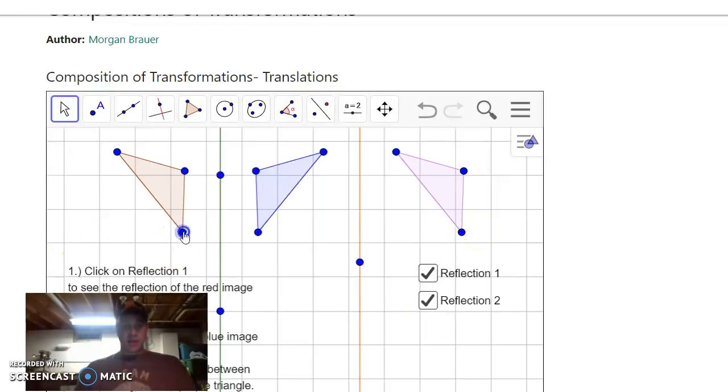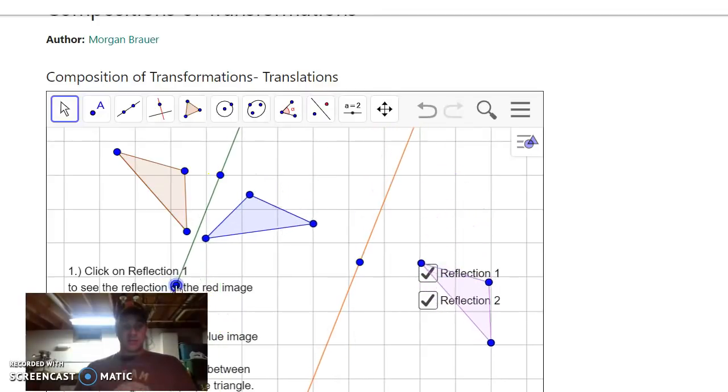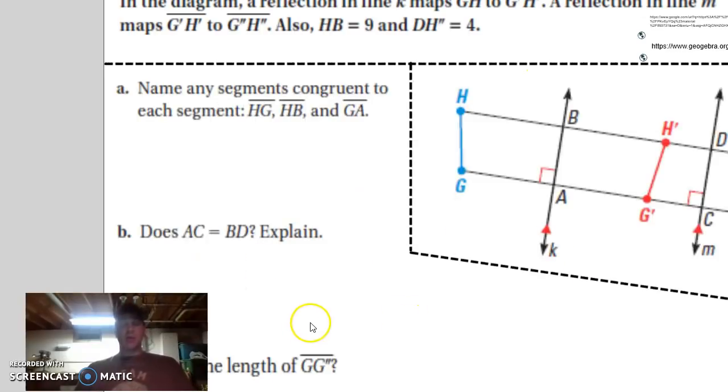no matter what that triangle originally looks like, when I reflect it and reflect it again, this first triangle looks exactly the same as the second one. And it's as if I did a translation. And as long as these two lines are parallel, and even if I make them diagonal lines, as long as they're parallel, that still is going to be true, where this first one looks like it's just a translation into the second one. So now, going back to your notes.